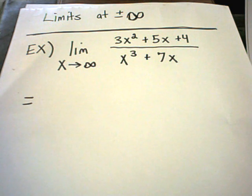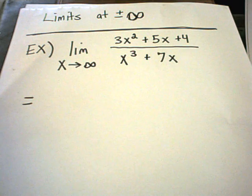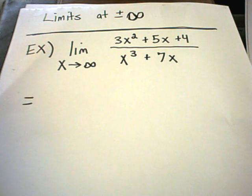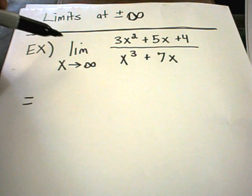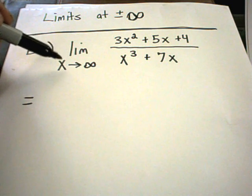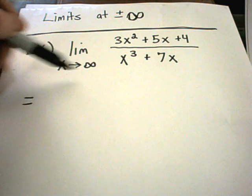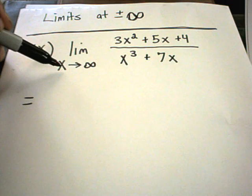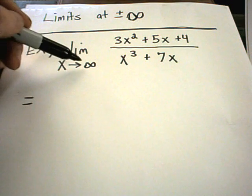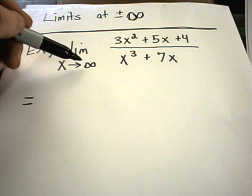In this example, or a couple examples, we're going to talk about limits at infinity, either positive infinity or negative infinity. The idea is the same as a regular limit. In this case, what the notation means is you're putting in values of x that get larger and larger and larger.